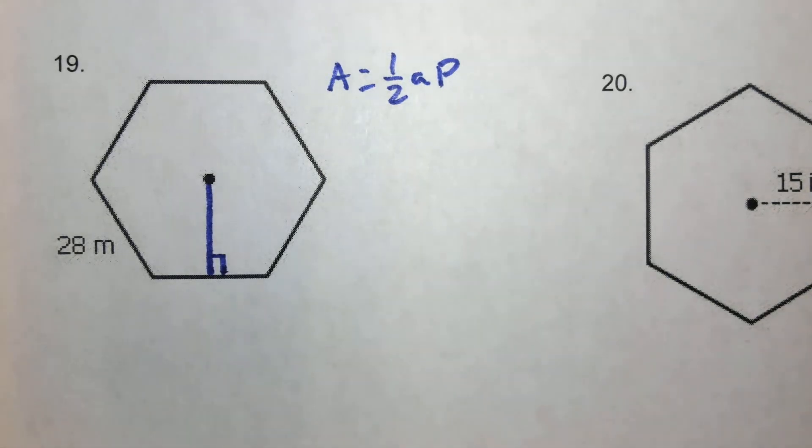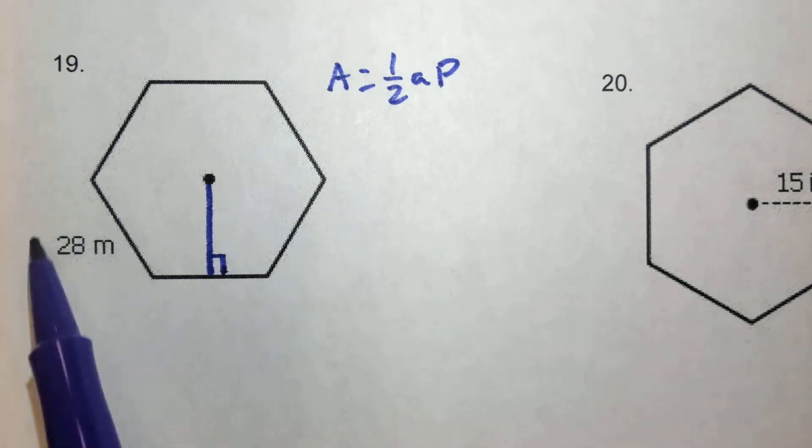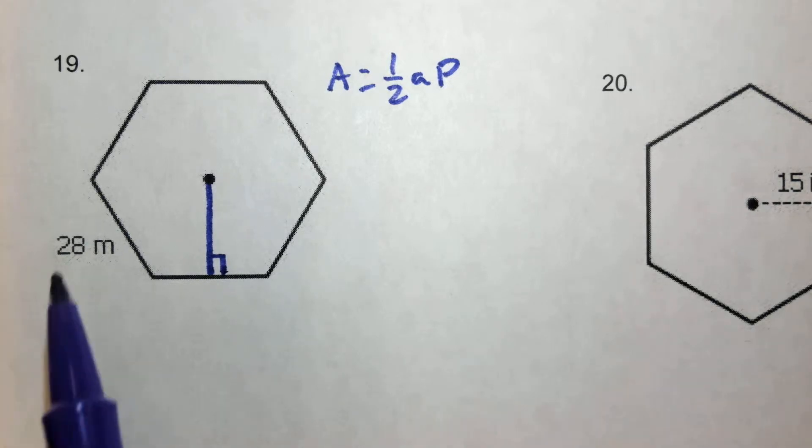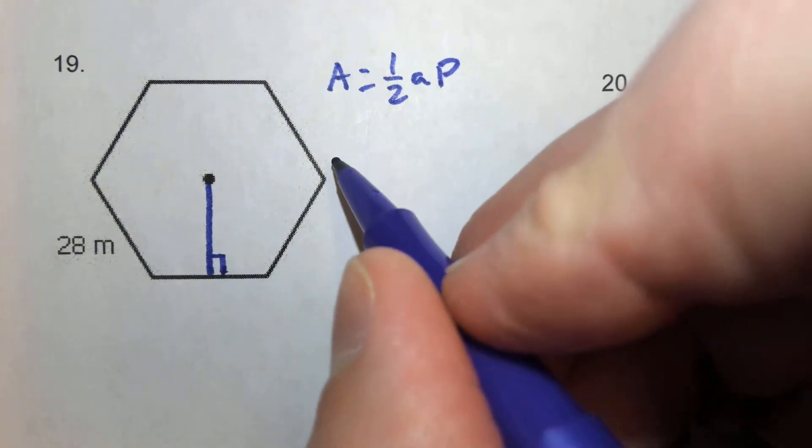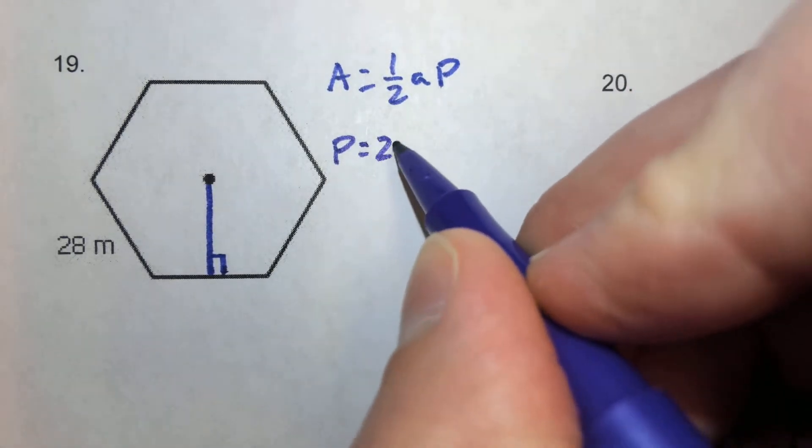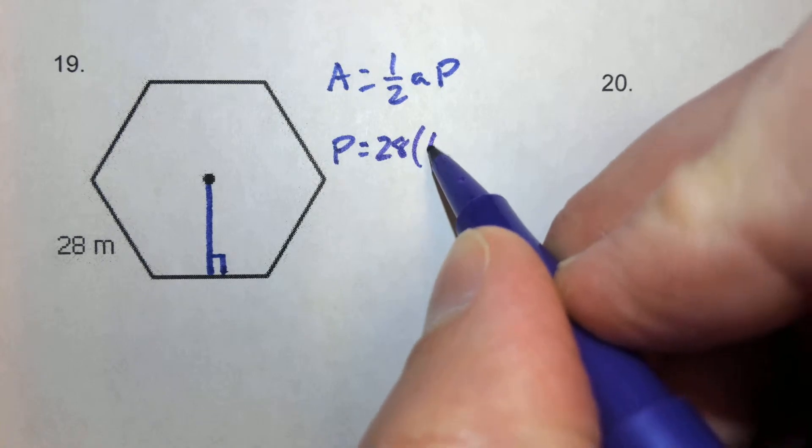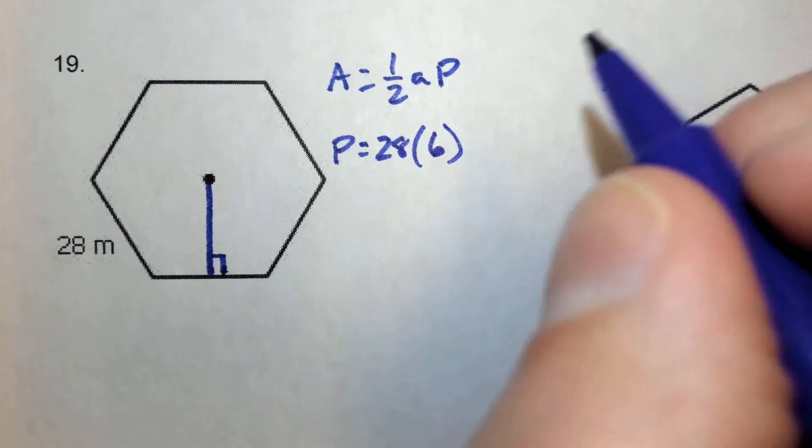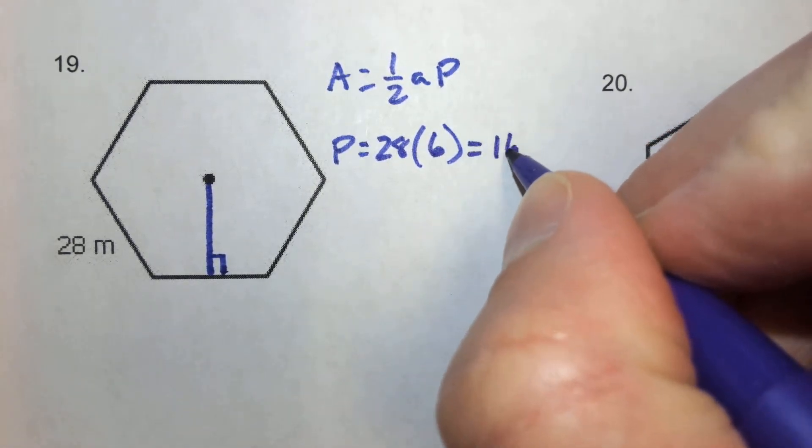Because we need the apothem and the perimeter, we can use this 28 side to figure out what the perimeter is. Of course, in a regular polygon, all sides are the same. So we can solve the perimeter pretty quickly by taking that 28 and multiplying it by 6. If we take 28 and multiply it by 6, that number is 168. So our perimeter is 168.